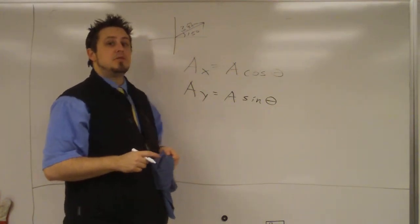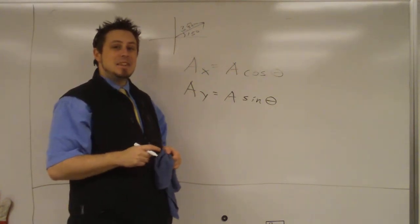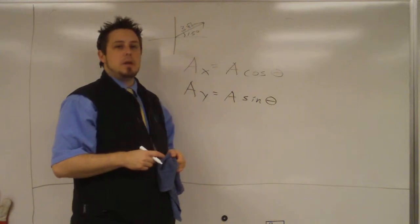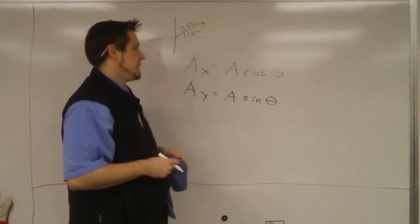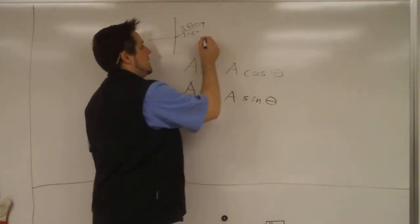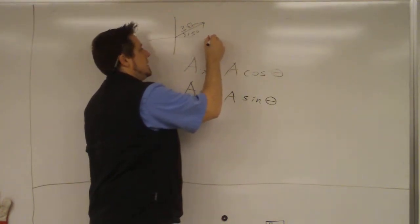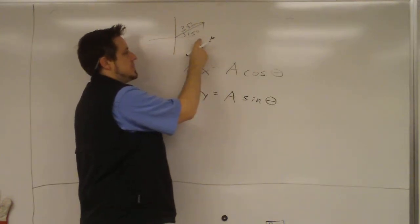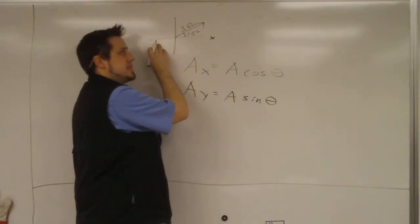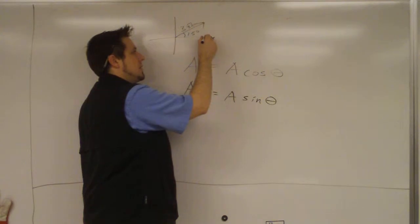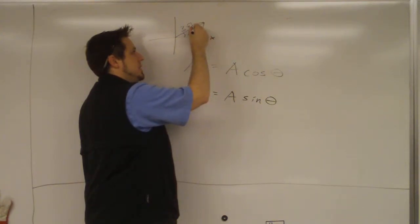Theta is measured from the positive x-axis counterclockwise until you hit the vector. This is the x-axis — this is the positive side, this is the negative side — so you start here and go counterclockwise to hit your vector.